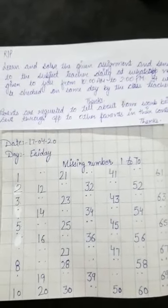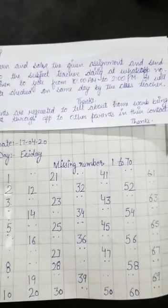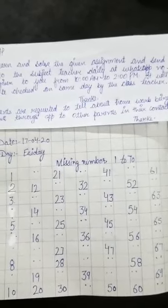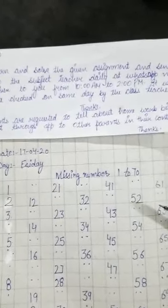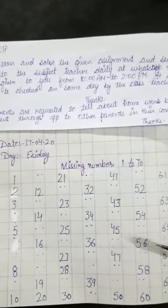Now we are going to start Maths written work. Topic is missing number 1 to 70. It is a very interesting topic because few of the numbers are written by your teacher and few have to be filled by your own.